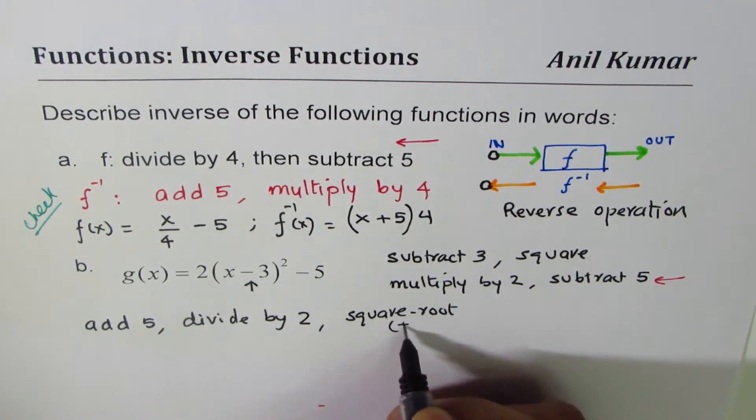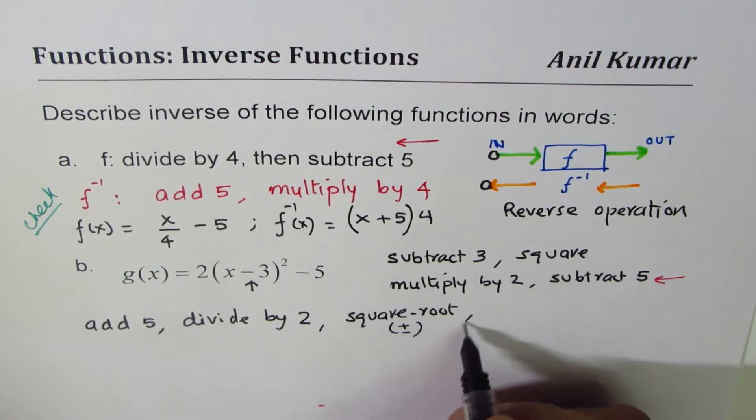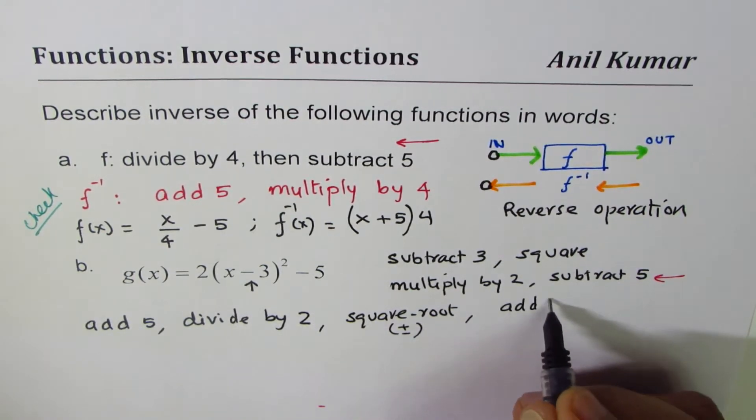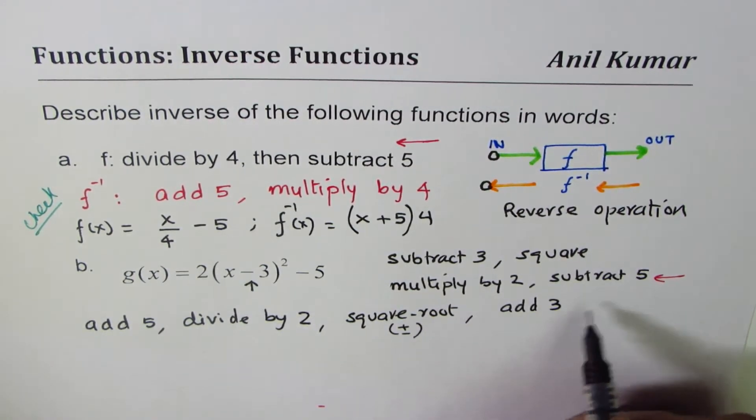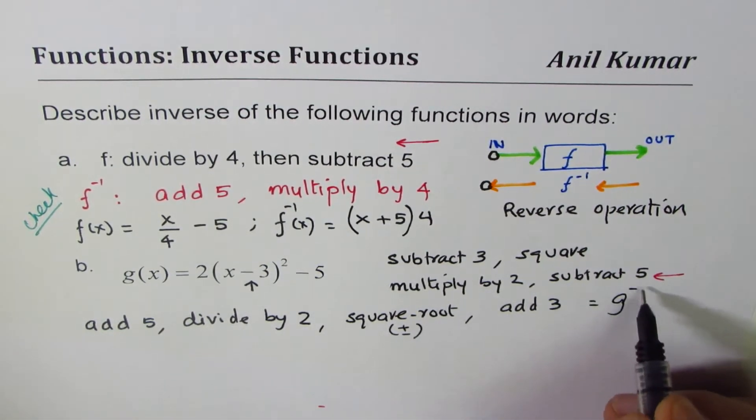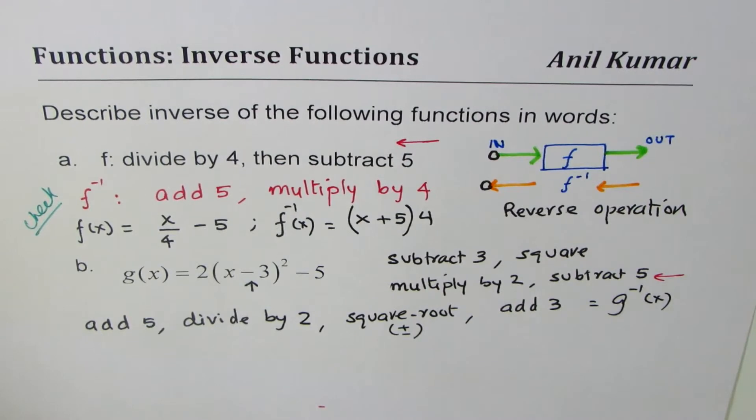That is reverse of square. Remember, whenever you do square root, you have to write plus and minus. And then instead of subtract 3, we'll do add 3. Do you see that? And then what you get is inverse of function. So this is equal to g inverse x. Perfect.